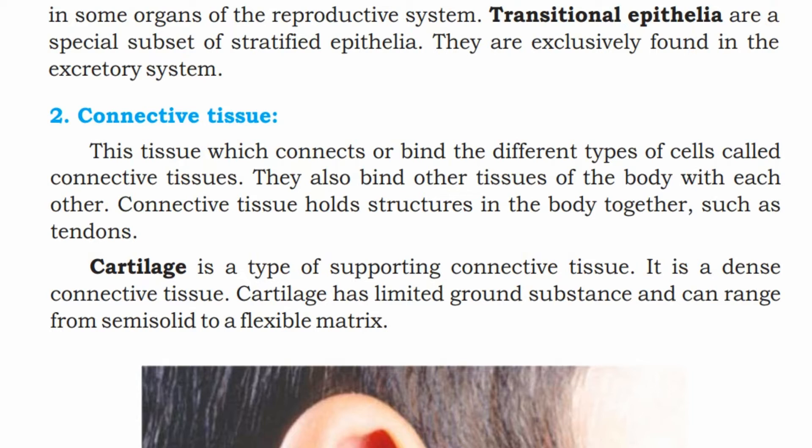Connective tissue holds structures in the body together, such as tendons. The main work of connective tissue is to hold cells so that they can do their work. The tendon is basically connective tissue which connects muscle to bone. This is why it is called connective tissue — because it holds different structures of the body together.